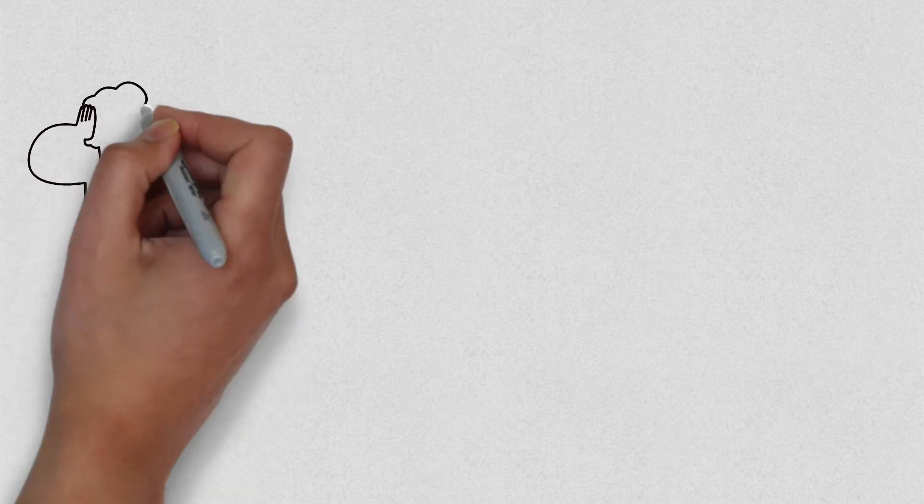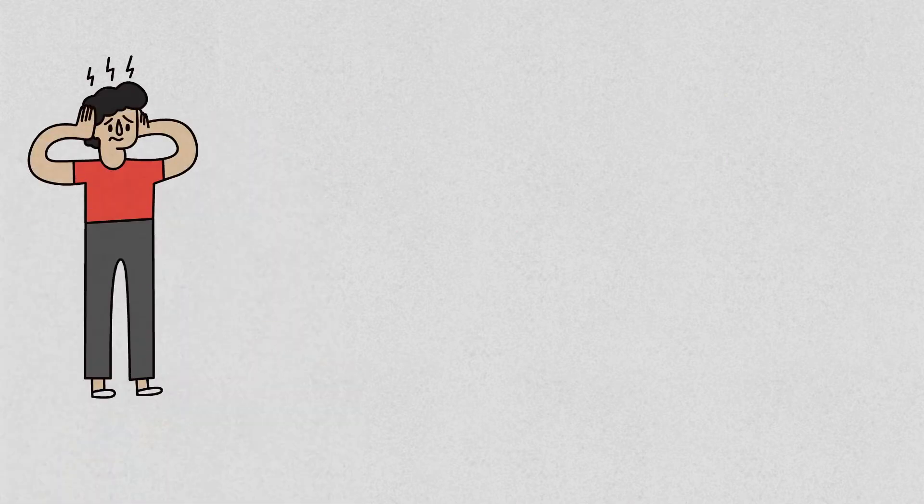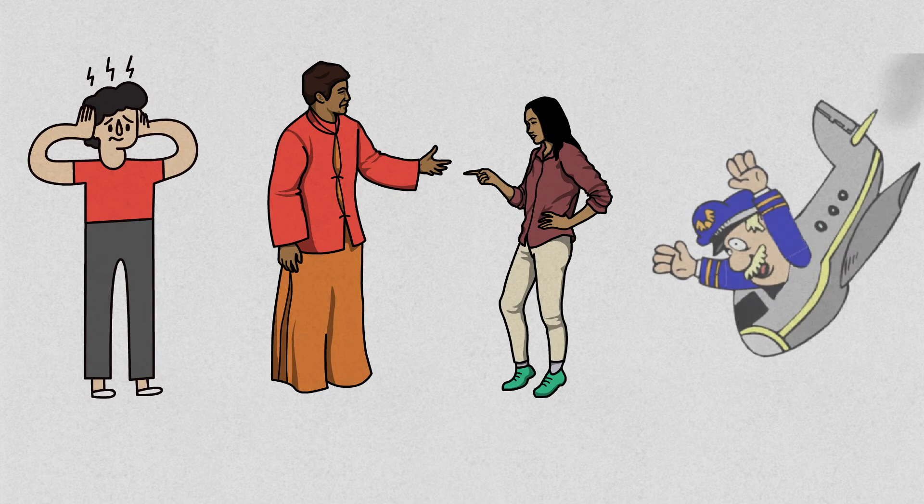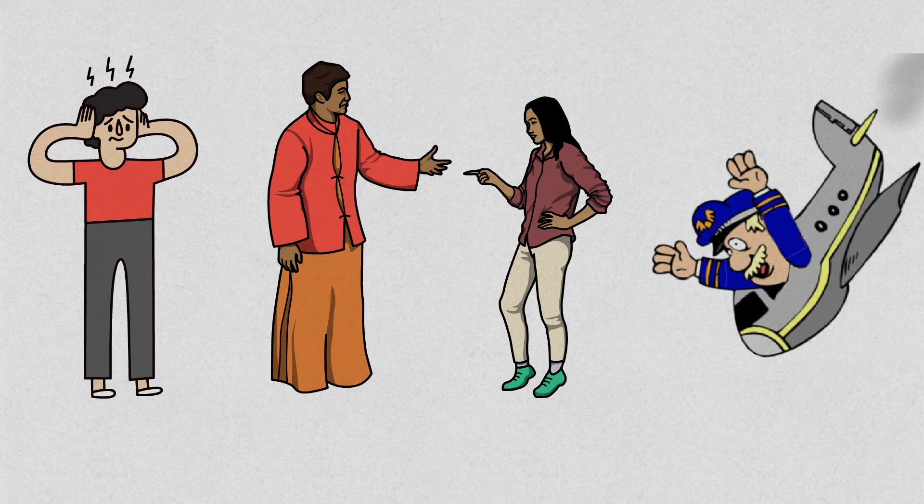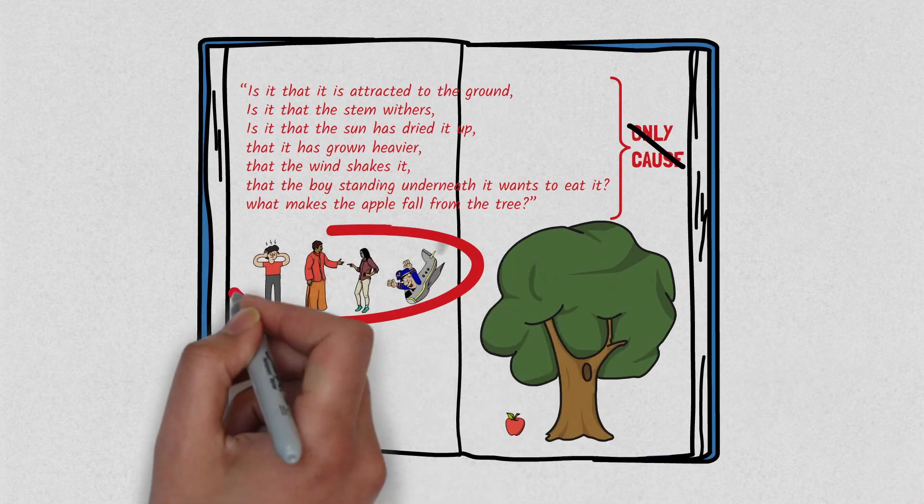For instance, the problem you are having right now, the fight you had with your friend, or the failure in your last venture. There are always thousands of reasons, or thousands of causes for every one of those events.